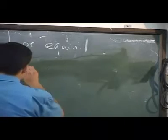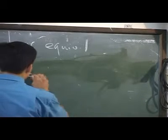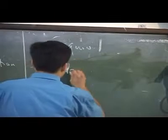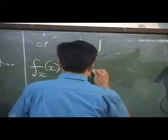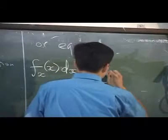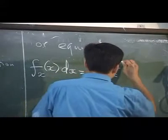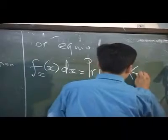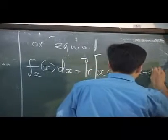This is important for me. f_x(x)dx is equal to the probability of x less than X less than x plus dx.